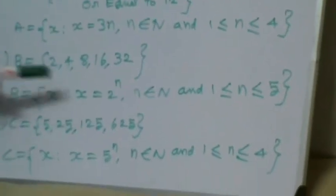So 2 power 1 is equal to 2, 2 power 2 is equal to 4, 2 power 3 is equal to 8, 2 power 4 is equal to 16, 2 power 5 is equal to 32.